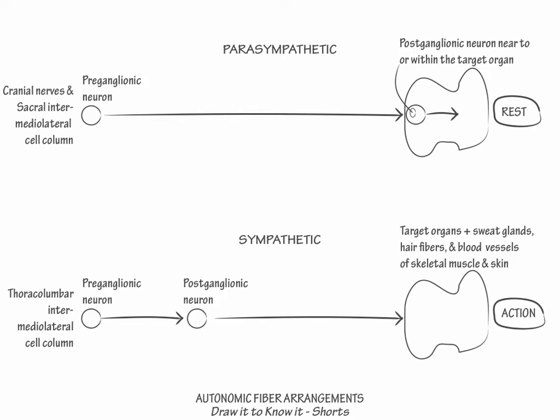Now let's label the relevant neurotransmitters involved in these autonomic fiber pathways. Indicate that both the preganglionic parasympathetic and sympathetic neurons release acetylcholine. Then indicate that all postganglionic parasympathetic fibers release acetylcholine, and that most postganglionic sympathetic fibers release norepinephrine, or noradrenaline.